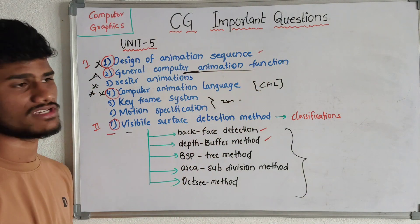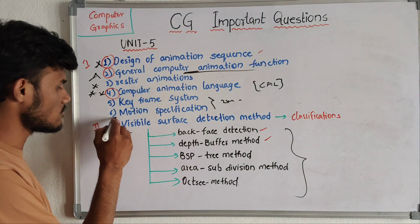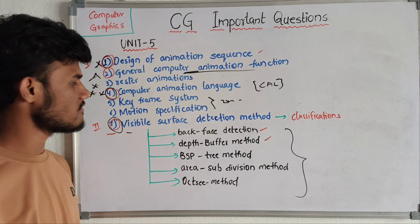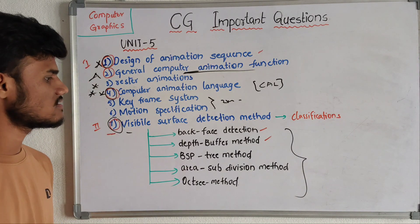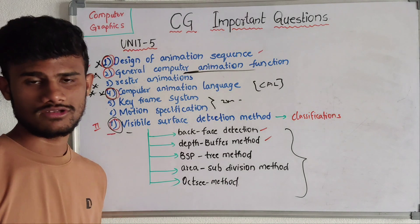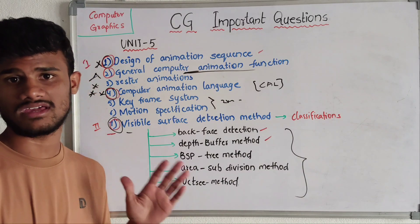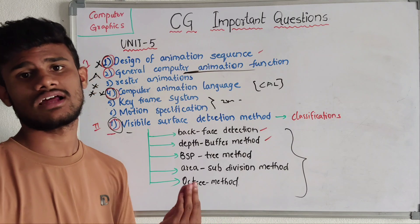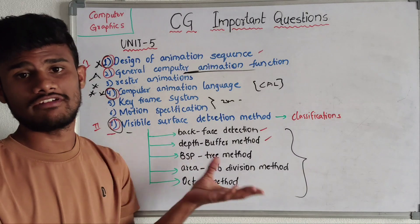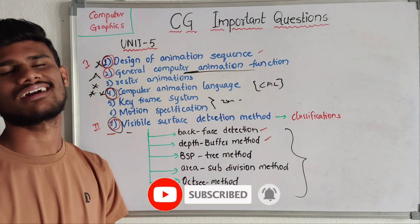Design of animation sequence is a key topic. From the second part, the first question and computer animation language are must-answer questions — three questions must be answered. This is completely about the fifth unit and computer graphics overall. I will post it in the playlist so this video will be very useful. Don't forget to subscribe to our channel — thank you for watching.